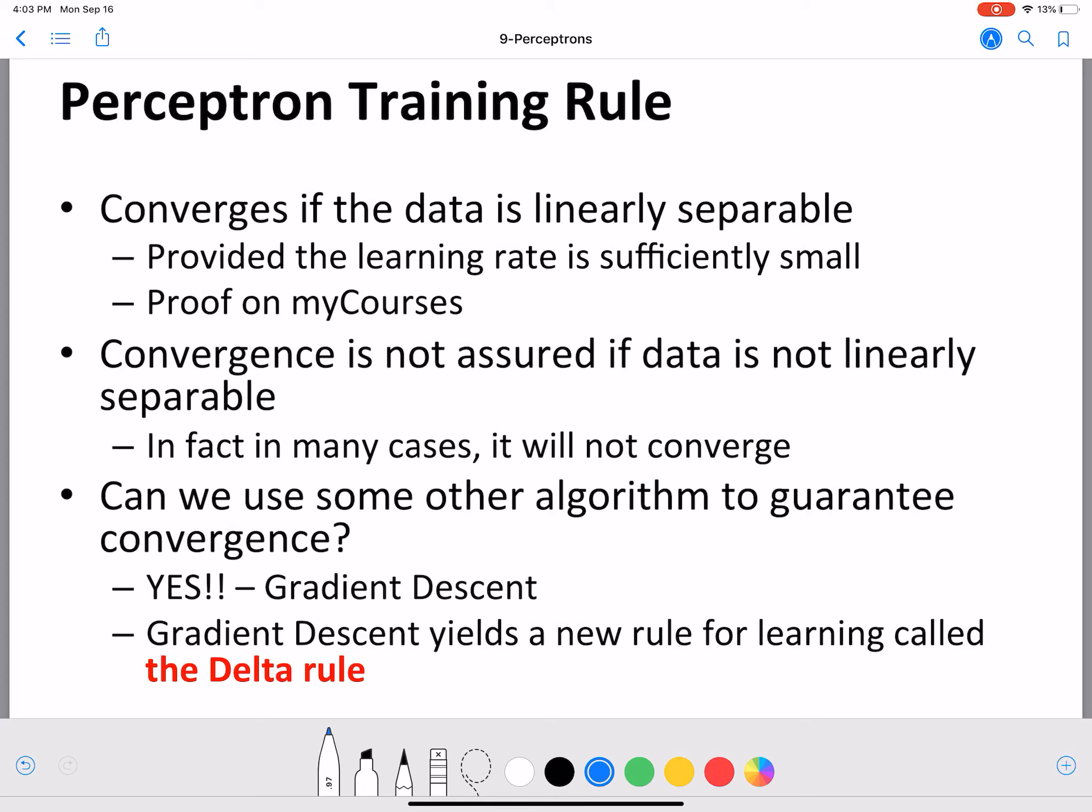Convergence is not assured if data is not linearly separable. In many cases it will not converge, which is why we have another way, a better way to learn the weights, which we'll look at next. It's called gradient descent, similar to what we learned for logistic regression, but in the context of perceptrons. The gradient descent algorithm uses another rule for learning called the delta rule.